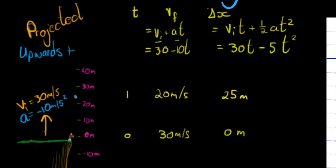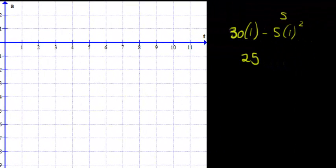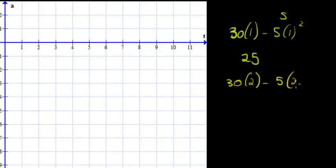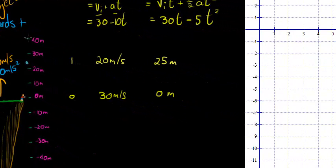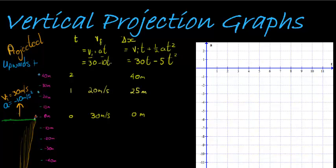After two seconds: 30 times 2 minus 5 times 2 squared. 5 times 4 is 20, and 30 times 2 is 60, so 60 minus 20 gives 40 meters up in the air. Velocity: 30 minus 10 times 2 gives 10 meters per second. I'm losing another 10 meters per second - still traveling upwards, but clearly losing velocity.